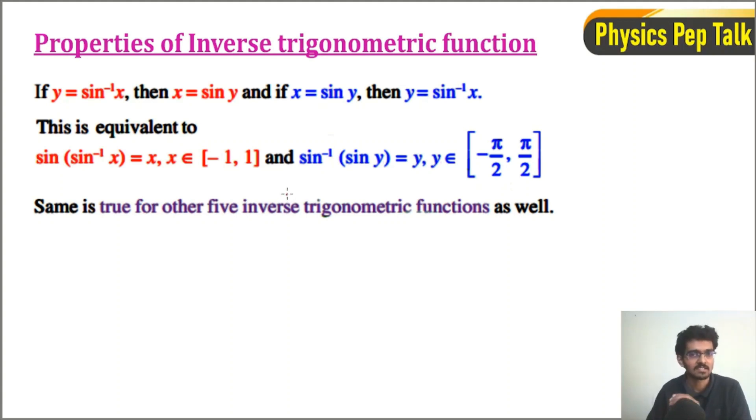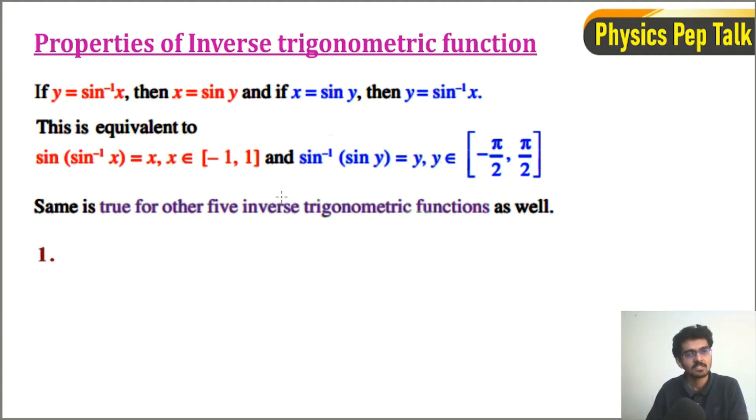That is, it applies to tan, cot, cos, and cosec and secant. This is the first set of properties. The first one is sin inverse of 1 divided by x is equal to cosec inverse of x.